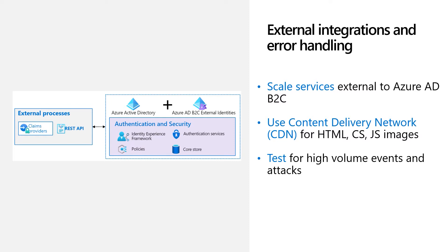Now, what if there is an upcoming high-traffic season and you need to scale your service? You should estimate peak load rates of directory reads and writes and all the calls to your downstream services. Your estimate should also include actions such as sign-up, sign-in, and multi-factor authentication. By keeping the traffic under the limits for an application or a tenant, you can avoid throttling. Be sure to test end-to-end for peak traffic.